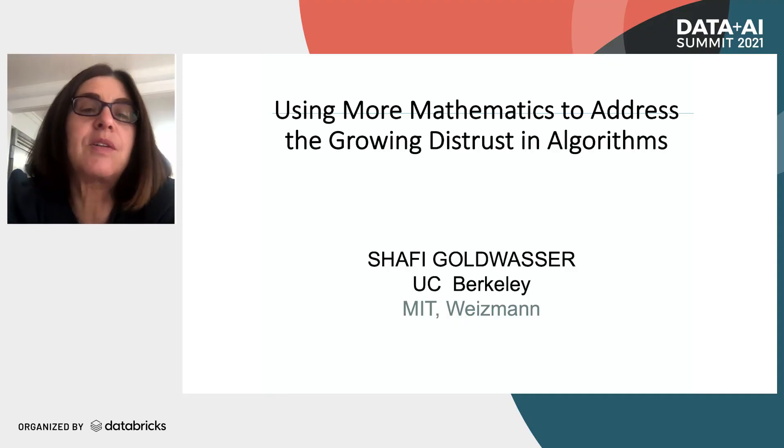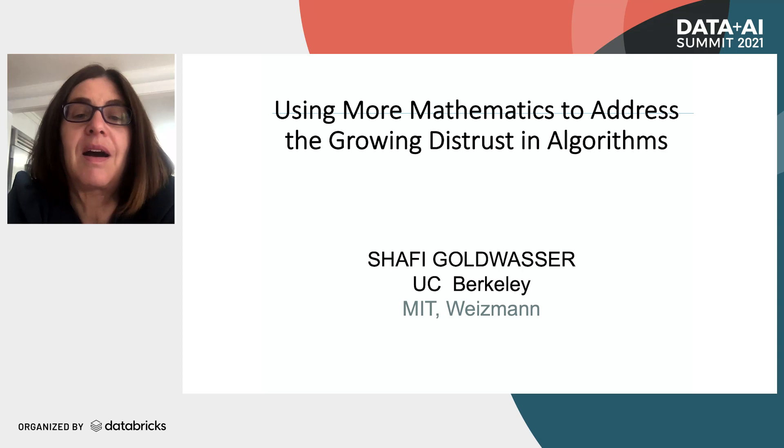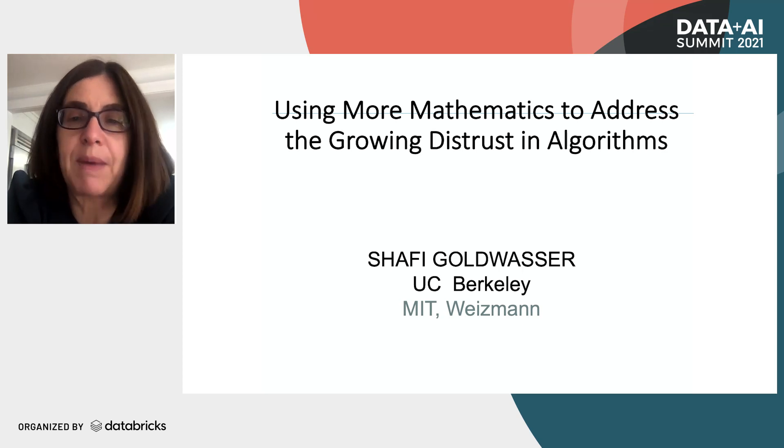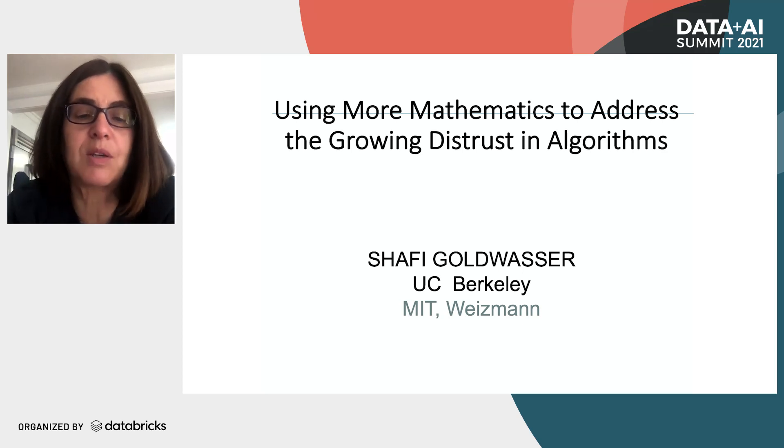Hi, everyone. My name is Shafi Goldwasser. I'm a professor at UC Berkeley and a director of the Simons Institute for Theory of Computation. I would like to tell you today a bit about how we can use more mathematics to address the growing distrust in algorithms.